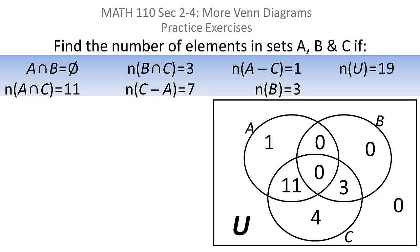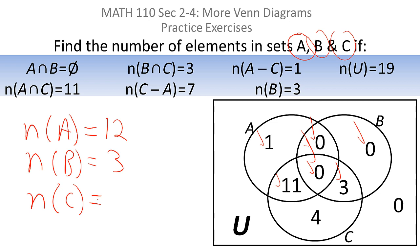If they actually ask you to find the number of elements in sets A, B, and C, I should now say that the number of elements in set A is eleven plus one plus zero plus zero, that would be twelve. And I'd say the number of elements in set B would be zero plus zero plus three plus zero, which is three. And the number of elements in set C would be eleven plus zero plus three plus four, which would be eighteen.